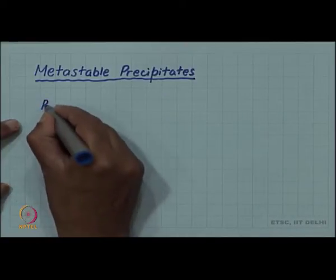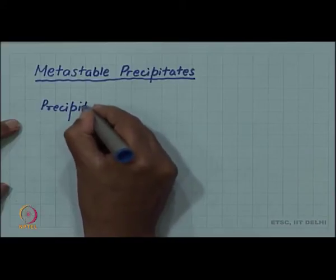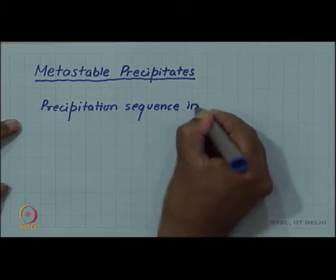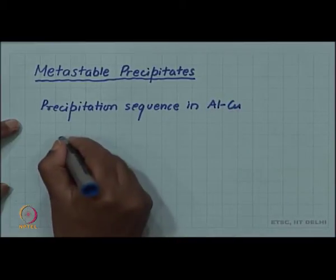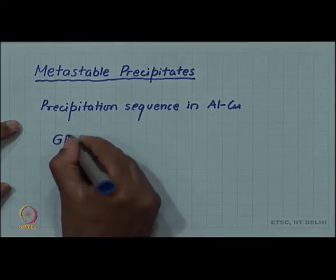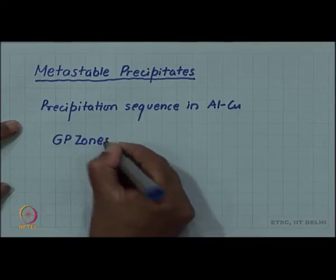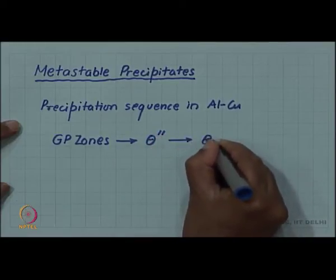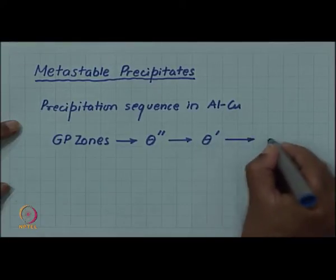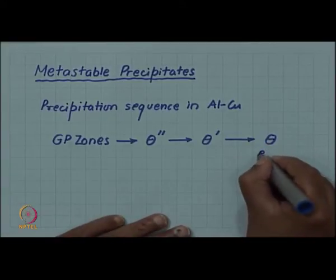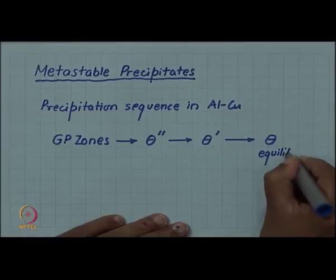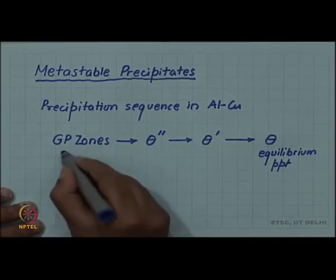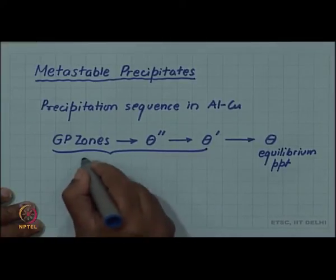So, the precipitation sequence in aluminium-copper alloy is that initially some precipitates known as GP zones form, which then transform into theta double prime, then into theta prime, and finally into theta, which is the equilibrium precipitate. All the first three — GP zones, theta double prime, and theta prime — are metastable precipitates.